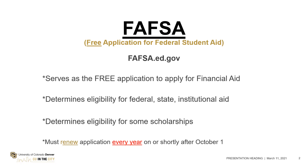The FAFSA process is an every-year thing. Every October 1st, the FAFSA application for the next academic year will be available. Everyone starting school in fall of 2021 will complete the 2021-22 FAFSA application. You do have to renew your FAFSA information every single year, and it will be available October 1st of each year.